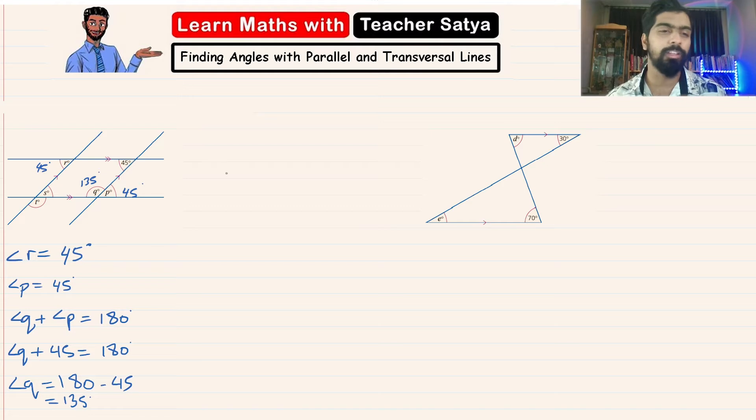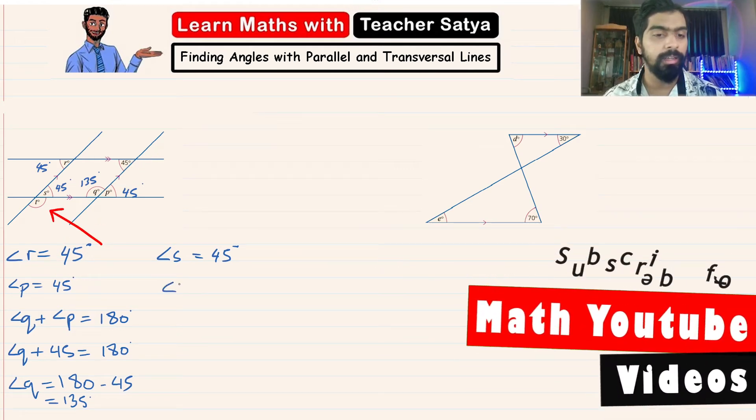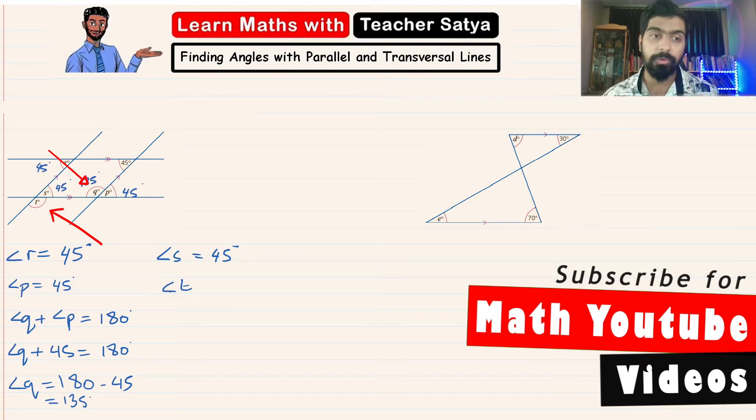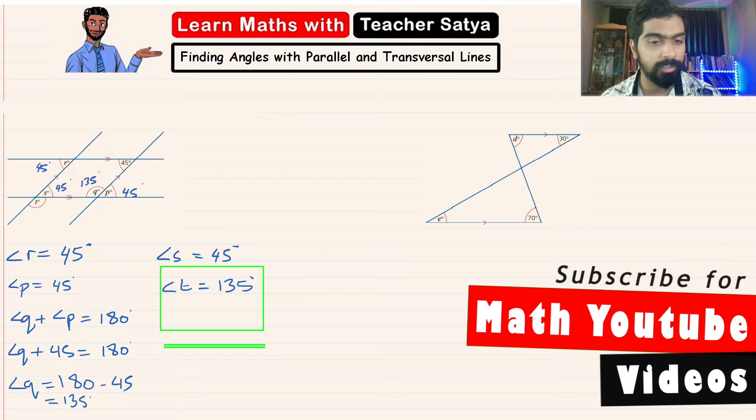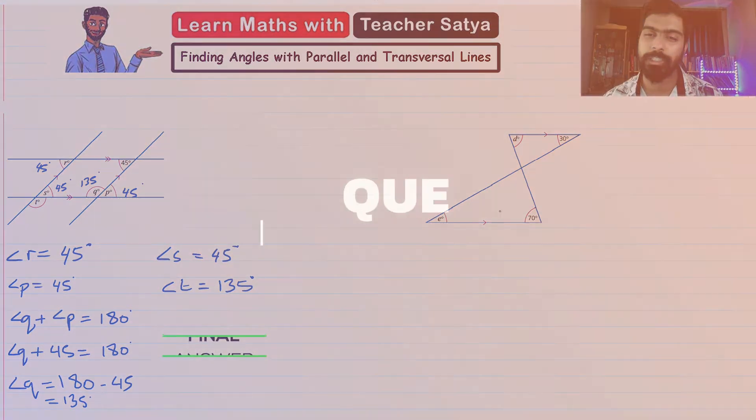Now the remaining is pretty straightforward. We know that angle S is corresponding to angle P, so angle S is also equal to 45 degrees. And we know that angle T and angle Q are alternate angles, so they are equal. Therefore angle T is equal to 135 degrees. Now let's go ahead to the next question.